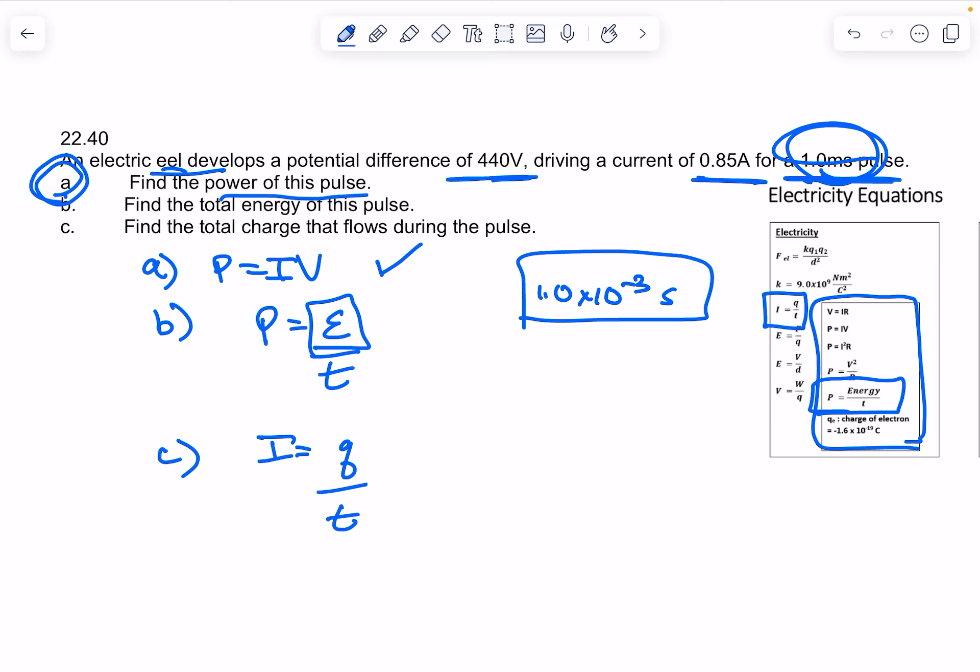I, of course, is the current, and we've got the current here—the 0.85 amps—and the time is the 1 millisecond. Q, of course, is the charge, so I'm going to use this equation to solve for part c.